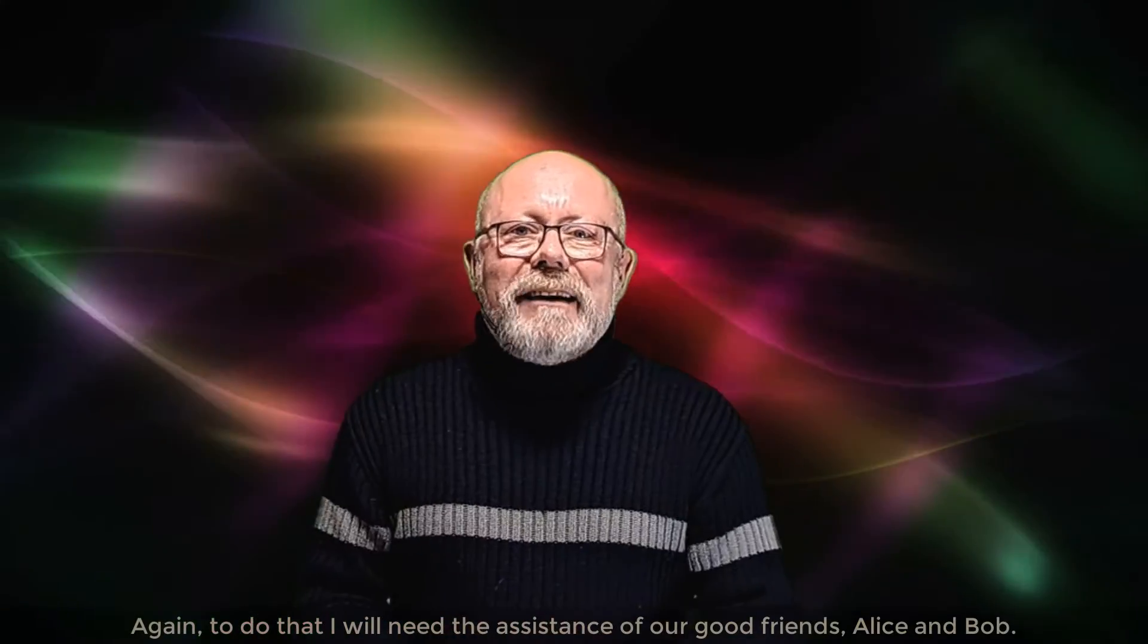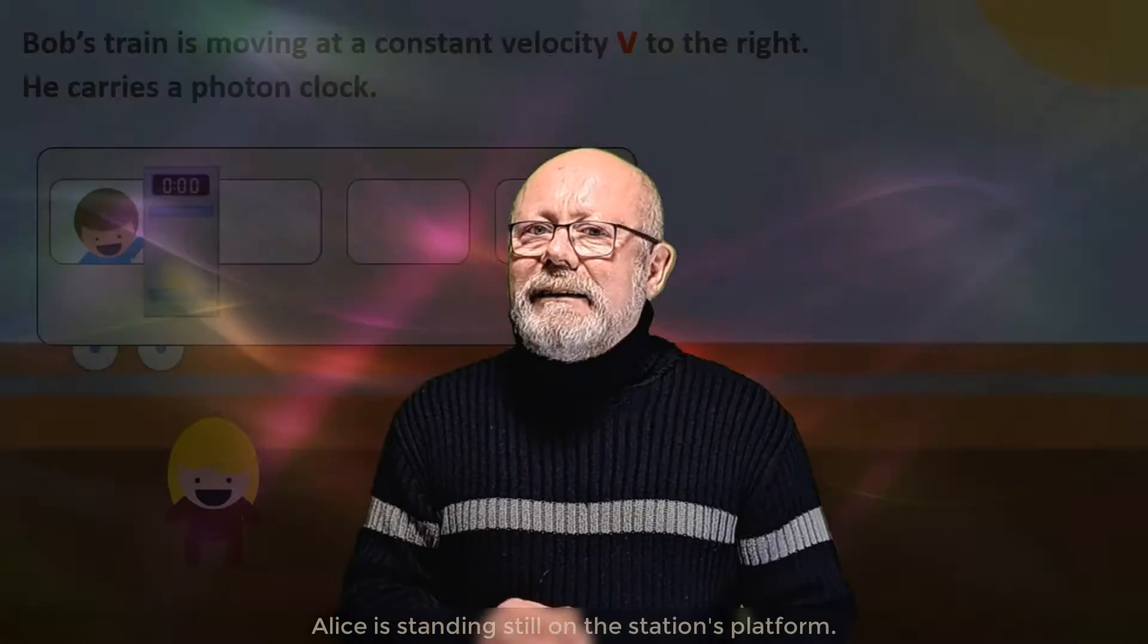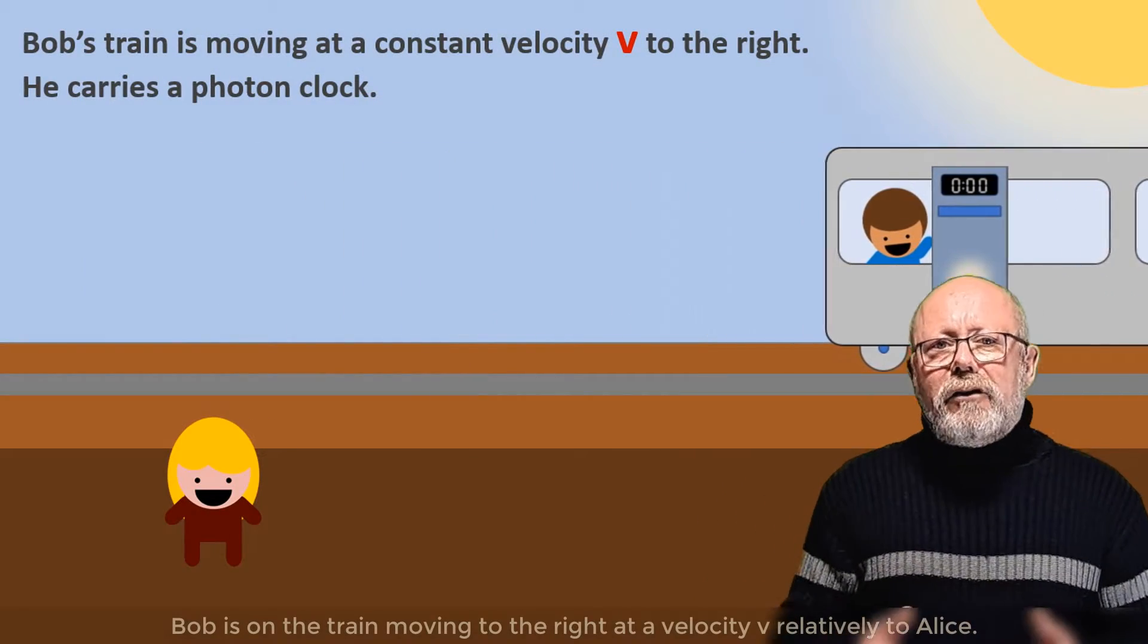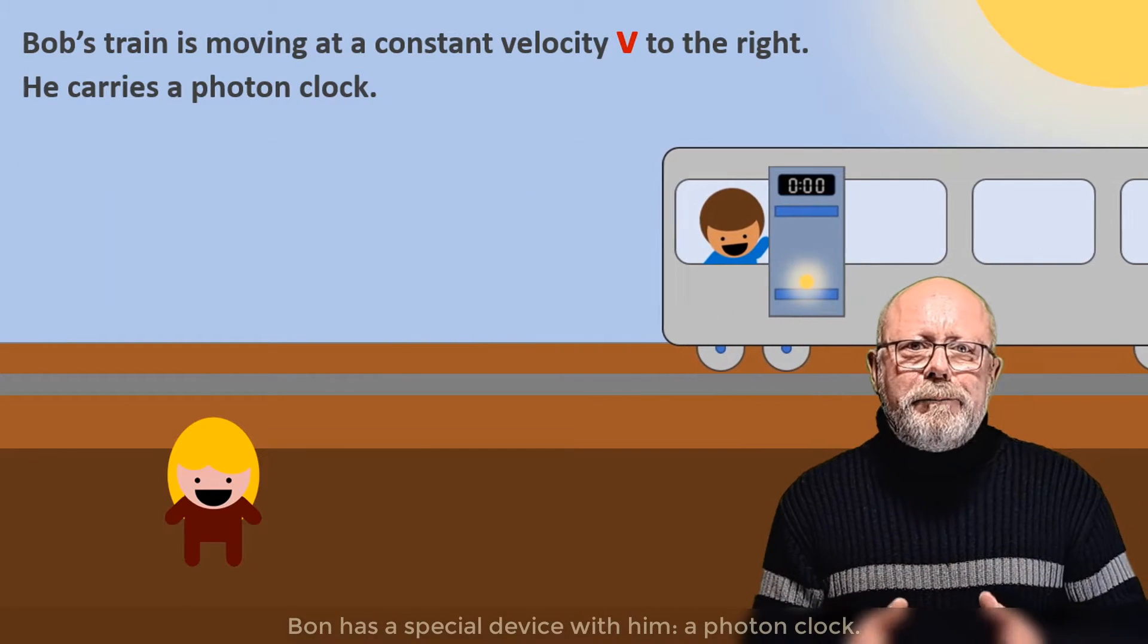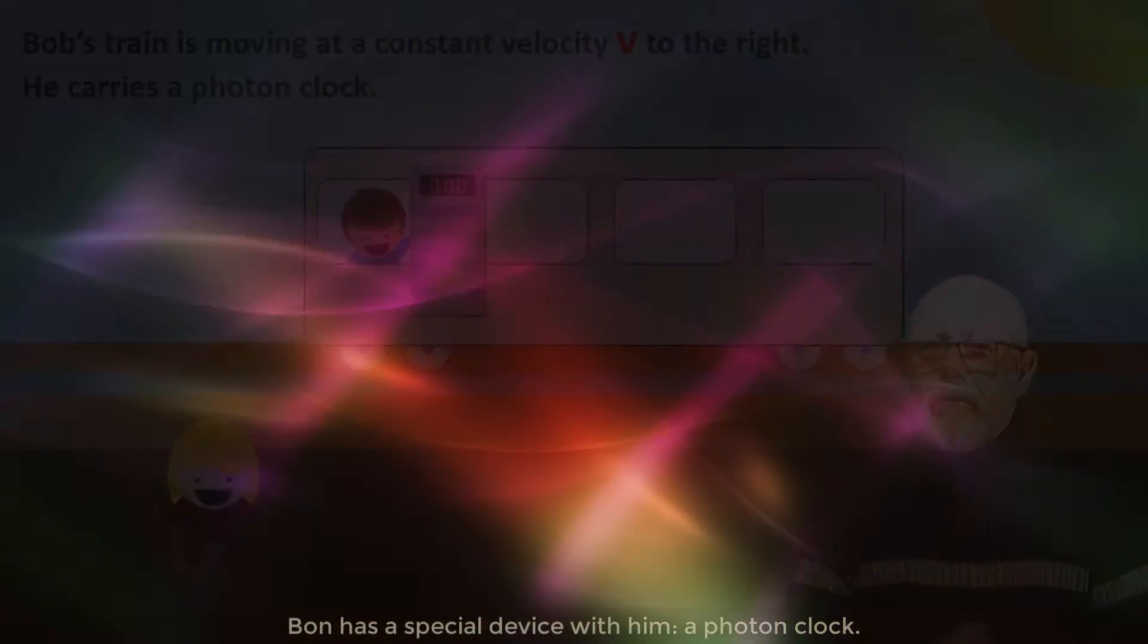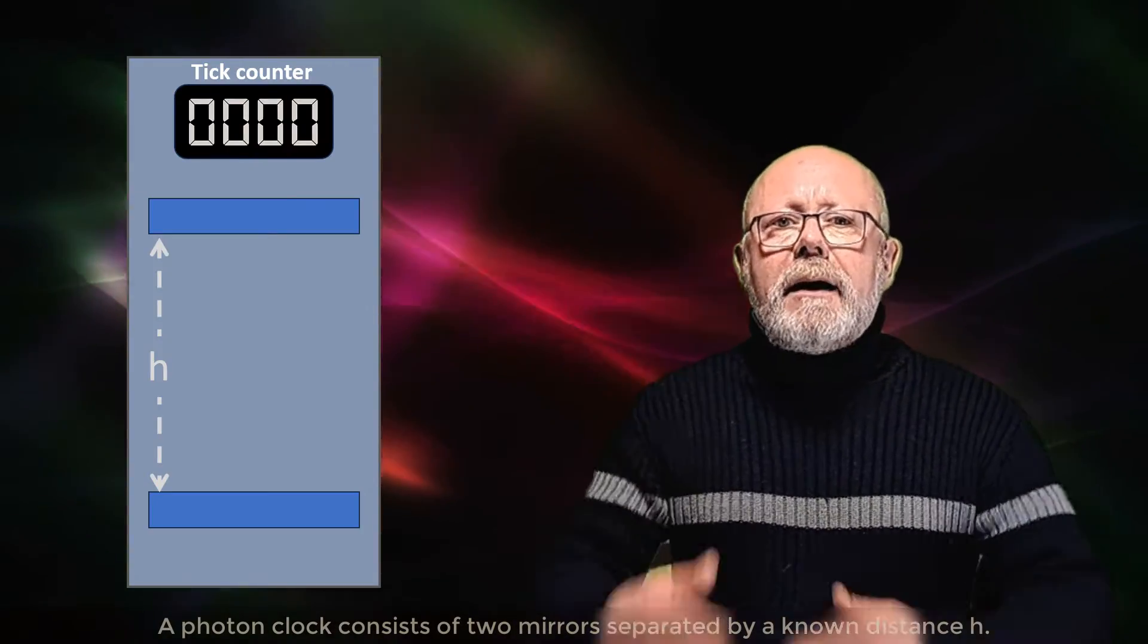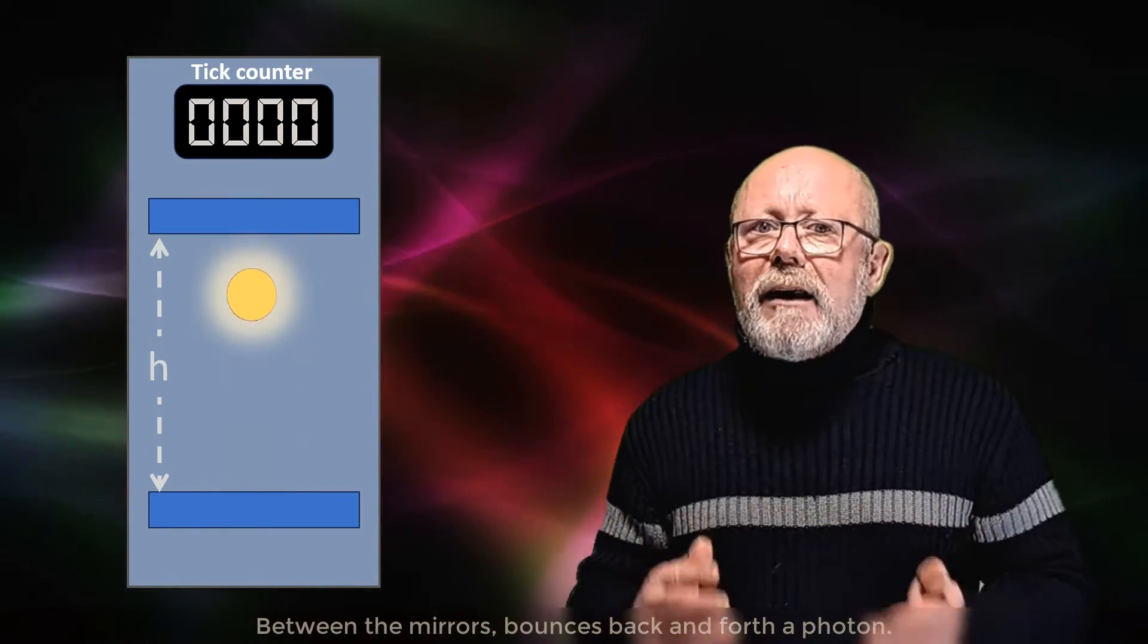Again, to do that, I will need the assistance of our good friends Alice and Bob. Alice is standing still on the station's platform, and Bob is on the train moving to the right at a velocity V, relatively to Alice. Bob has a special device with him, a photon clock.